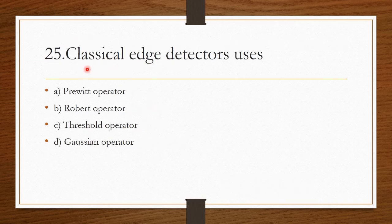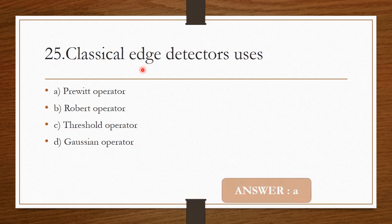Question 24: Classical edge detectors use — Option A: Previt operator. Option B: Robot operator. Option C: Threshold operator. Option D: Gashen operator. Classical edge detectors use the Previt operator. Option A is the correct answer.